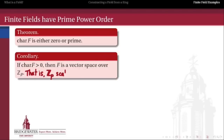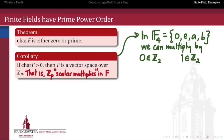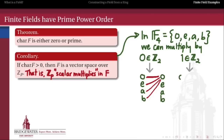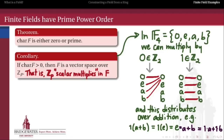Going back to what this actually means: Z mod p acts as the scalar multiplication in this vector space. In our example of F4, because the characteristic was 2, we're claiming that Z mod 2 can act like scalar multiplication. So multiplying by 0 kills everything, and multiplying by 1 preserves everything. This operation distributes over the addition in our field, which actually makes F4 a vector space over Z mod 2.